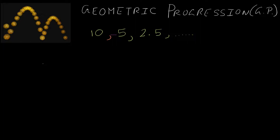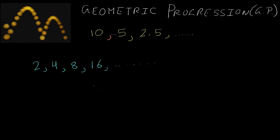You can also start counting the number of ancestors you have. You have two parents — mom and dad. Your mom has two parents, your dad has two parents, so you have four grandparents. Each grandparent has two parents, giving you eight great-grandparents, then sixteen great-great-grandparents, and so on.